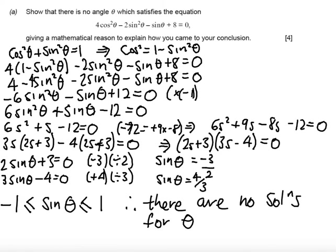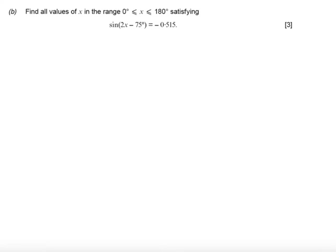Let's have a look at part B. Part B says find all values of x in the range 0 ≤ x ≤ 180 degrees that satisfy sin(2x - 75) = -0.515.